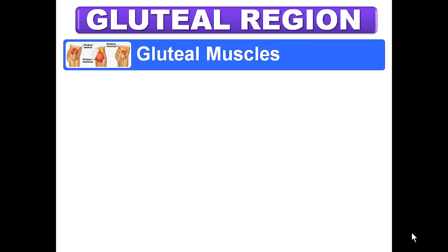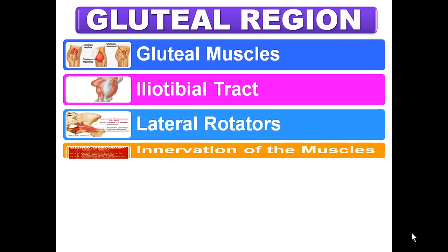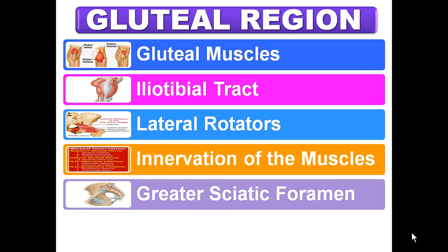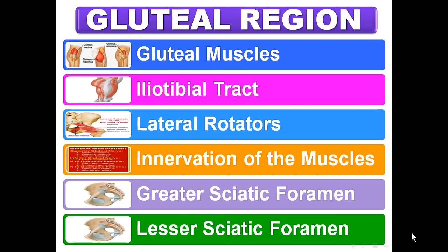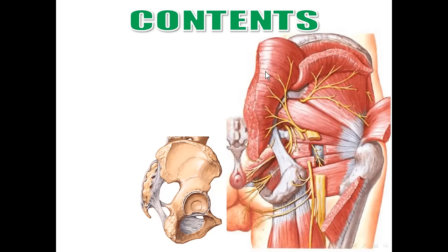Good morning everyone. This is Dr. Adel Banduk, Professor of Anatomy and Neuroscience, Monsoro University, Egypt. I will talk about the gluteal region, covering the gluteal muscles, the iliotibial tract, the lateral rotators of the hip joint, innervation of the muscles in the gluteal region, and the two foramina. The gluteal region contains muscles, vessels, and nerves.